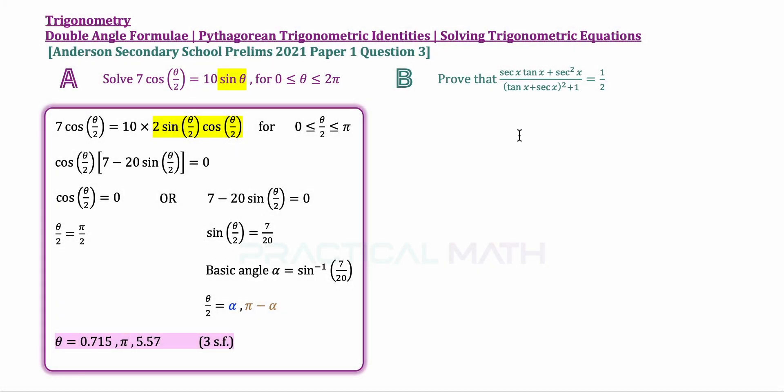For part B of this question, we are asked to do a simple proving of this trigonometric identity. On the left-hand side, we have secant x, tangent x, secant square x, as well as tangent square x if you expand this part. So it's a combination of a few things which is very complicated. On the right-hand side, it's simply a fractional half. For any proving of trigonometric identity, we will always start from the more complicated side, and in this case, the left-hand side.